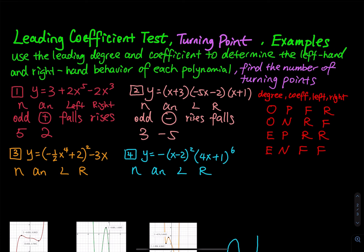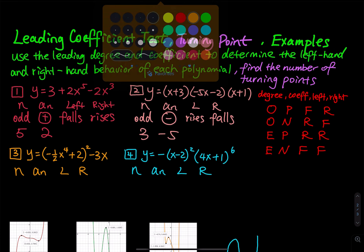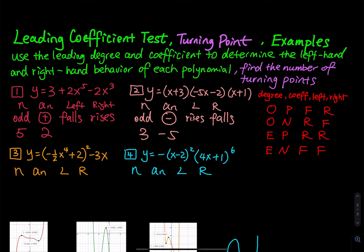For number 3, what is the highest degree? Don't say it's 4 — you have a square here. When you square that, you have negative 1/2 x to the 4th times itself, so x to the 4th times x to the 4th. Adding the exponents: 4 plus 4 equals 8. So the highest degree is 8.